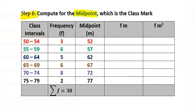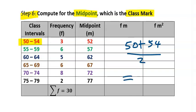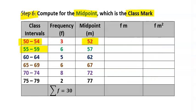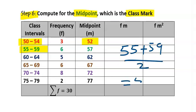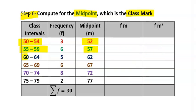Step six: compute the midpoint, also known as the class mark. For the first row, 50 to 54, the midpoint is (50 + 54) ÷ 2 = 52. For the next row, 55 to 59, the midpoint is (55 + 59) ÷ 2 = 57. Compute the same for the remaining rows.